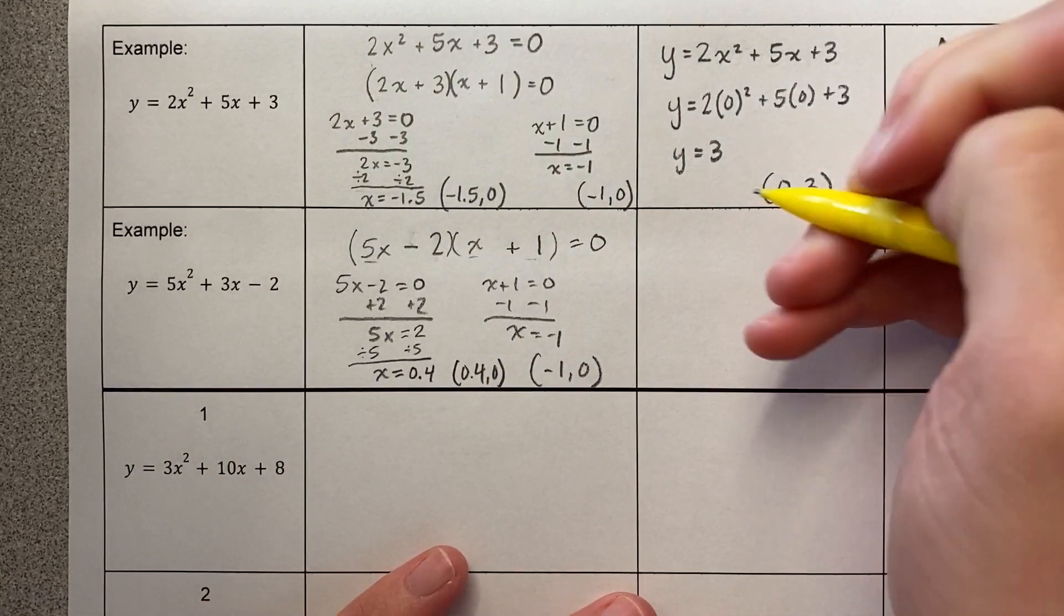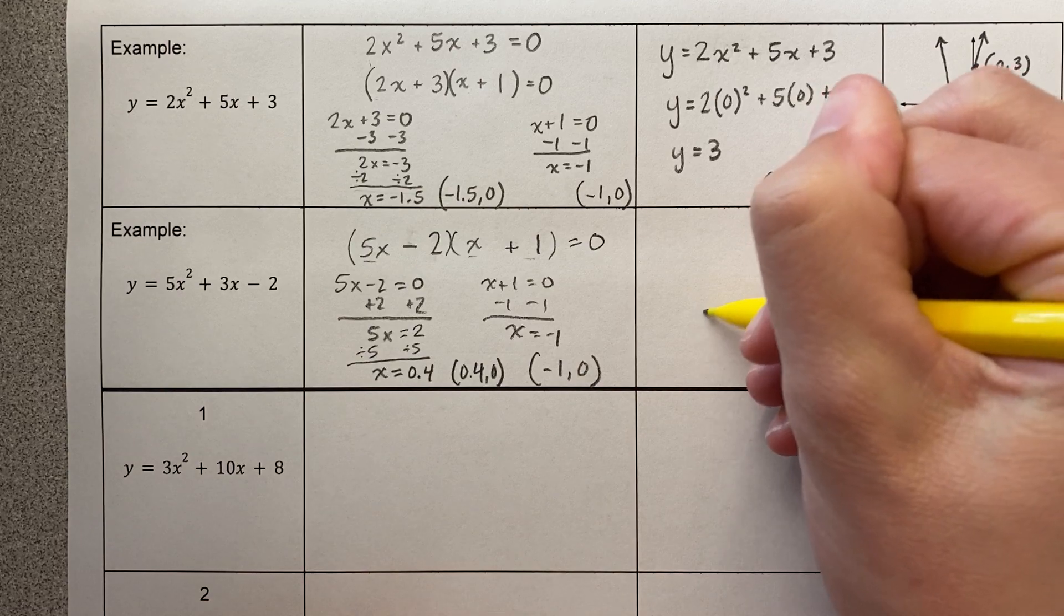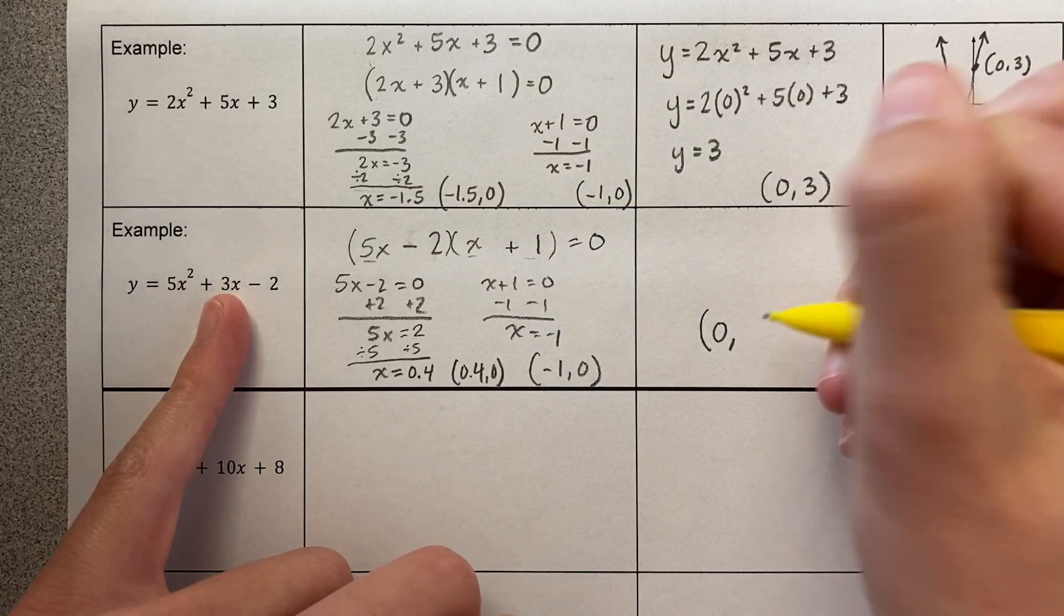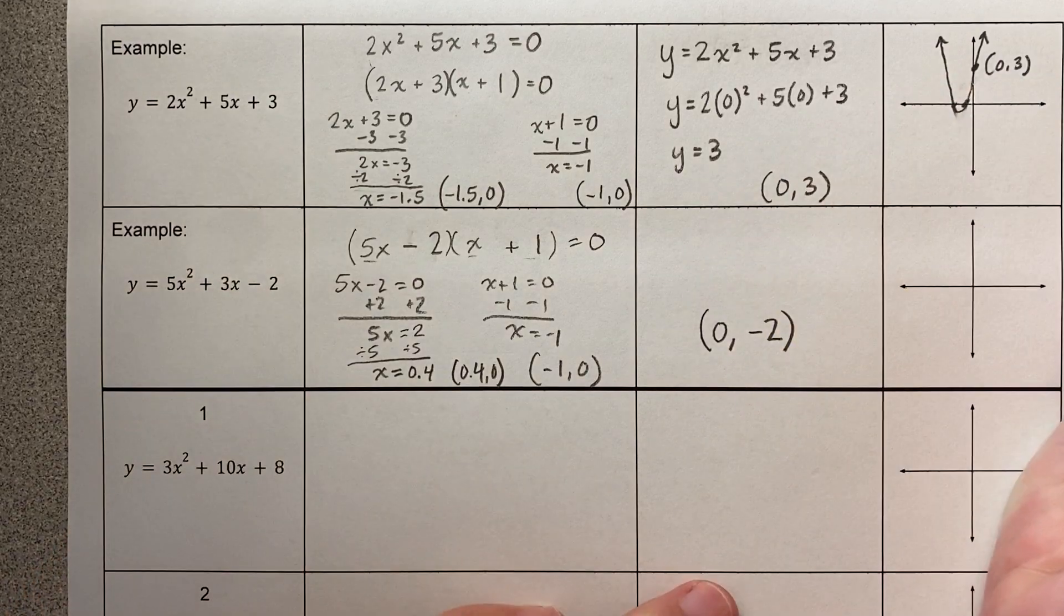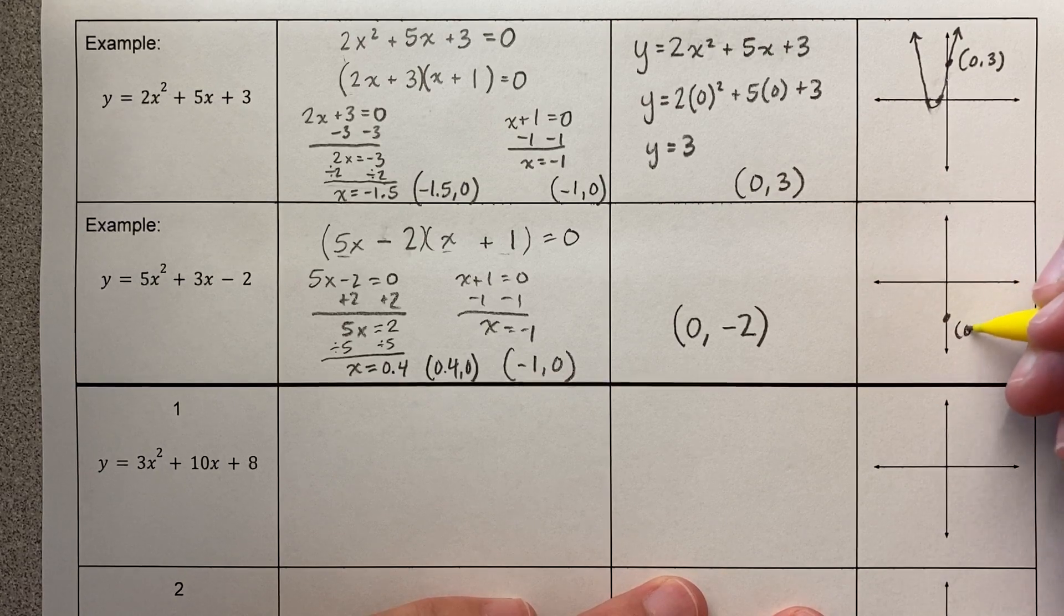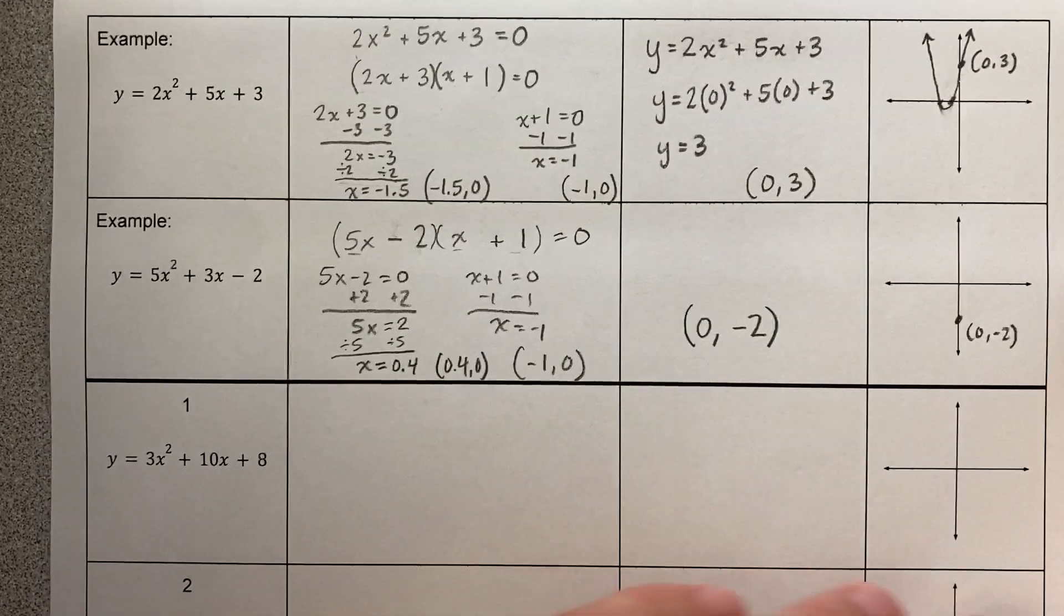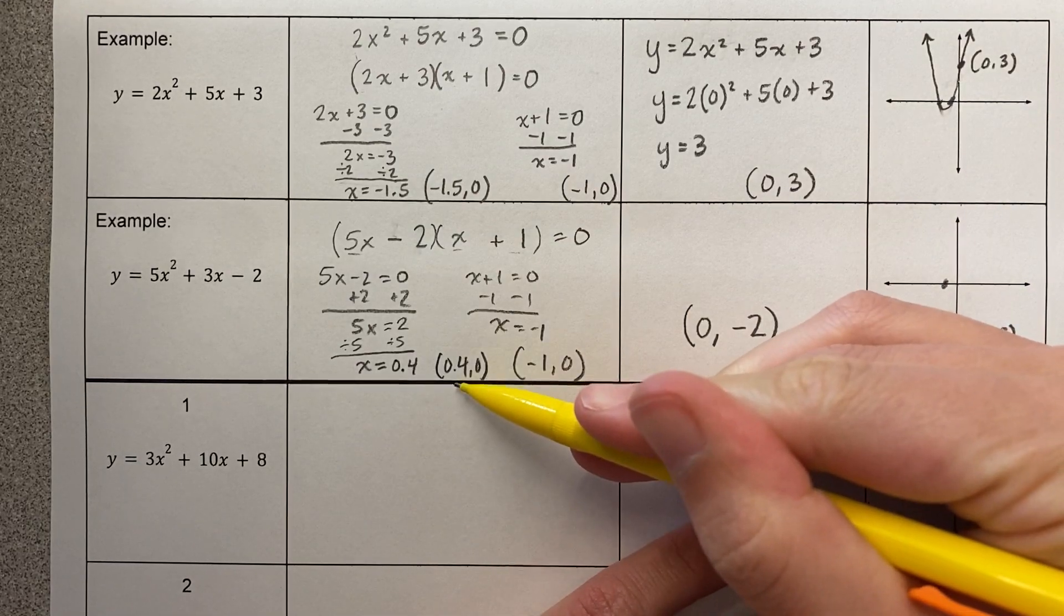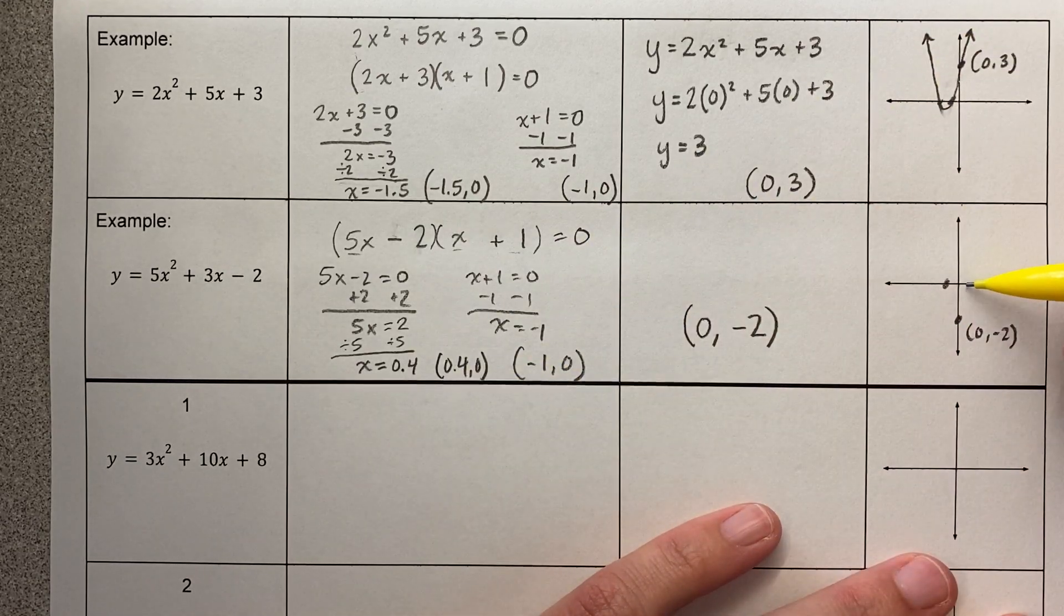Either way this is a number less than 1 comma 0, and my y-intercept, if I plug in 0 for x here, this term will be 0, this term will be 0, and my y-intercept will be negative 2. So let's graph these, they're all super small numbers, so I can put 0 negative 2 all the way down here because I don't have any numbers bigger than 2 actually.